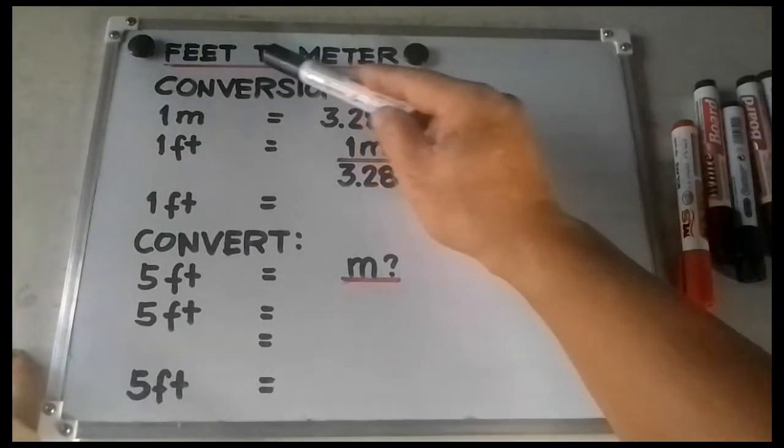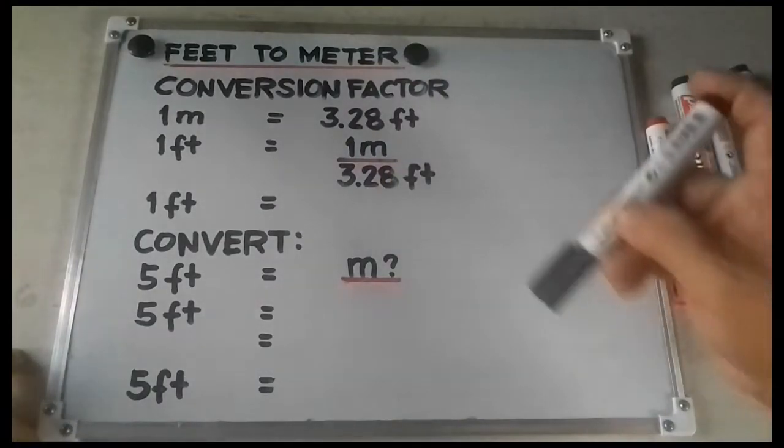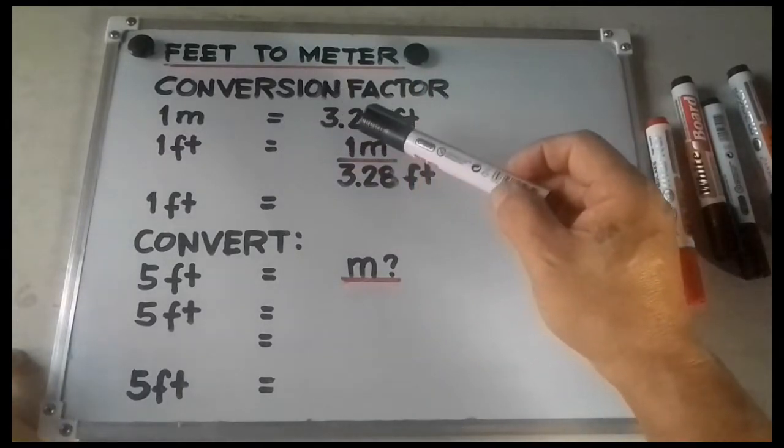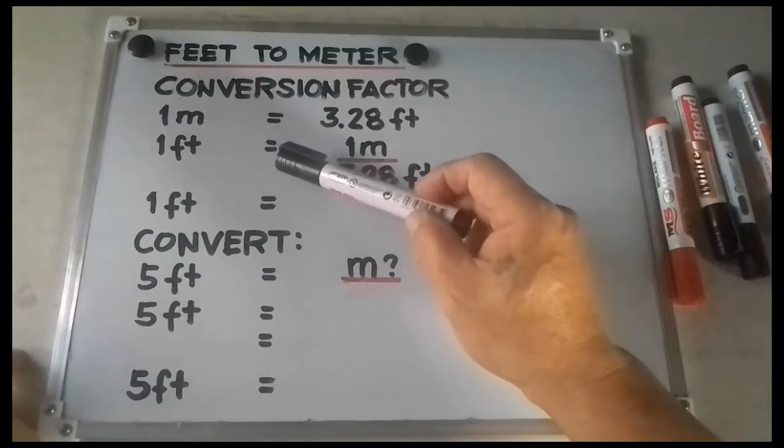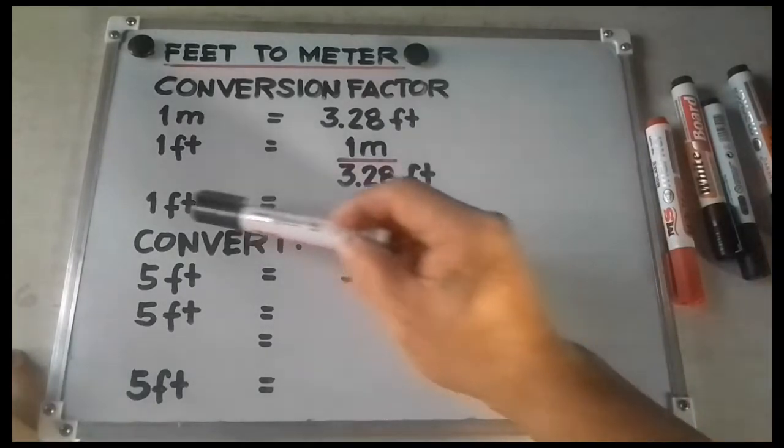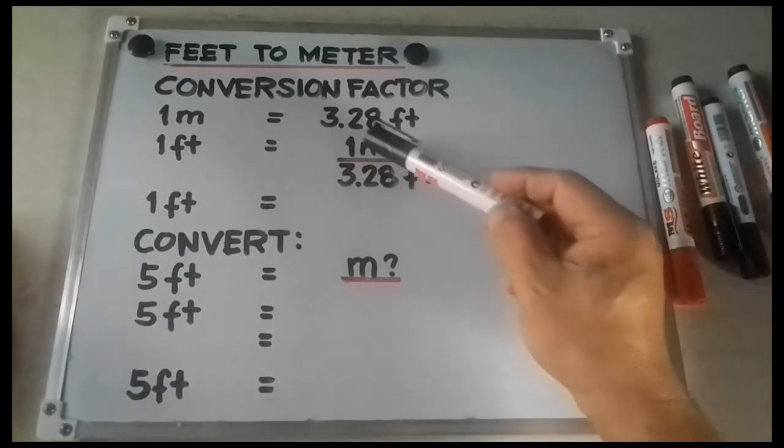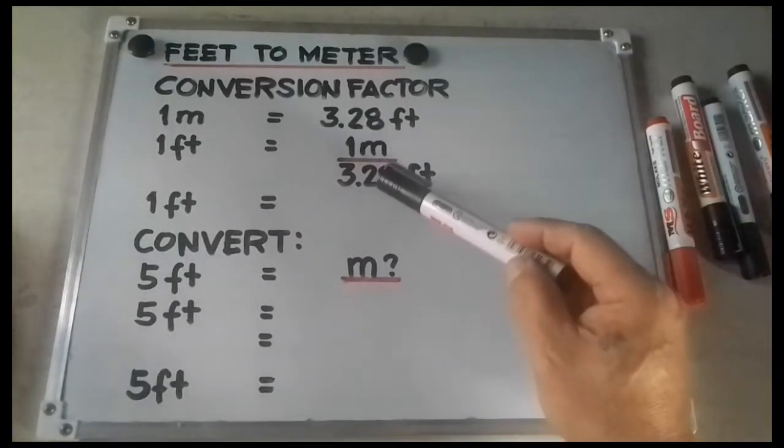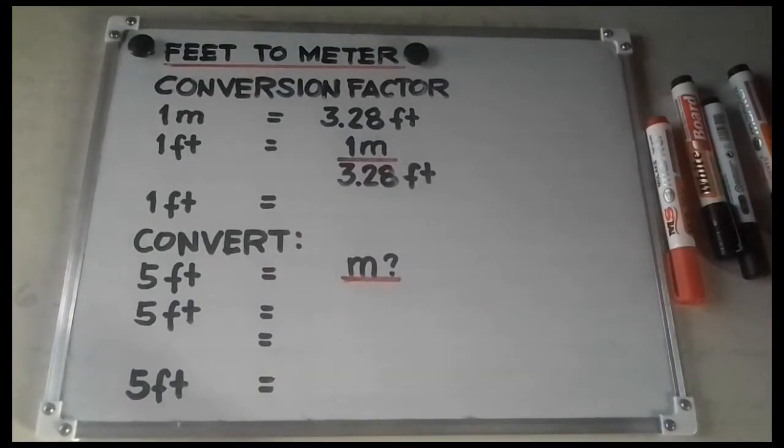Next is feet to meter. We have a conversion factor of 1 meter is equivalent to 3.28 feet. 1 foot is equal to 1 meter over 3.28 feet. So what you do is 1 meter divided by 3.28 feet, and that is 0.304 meters.